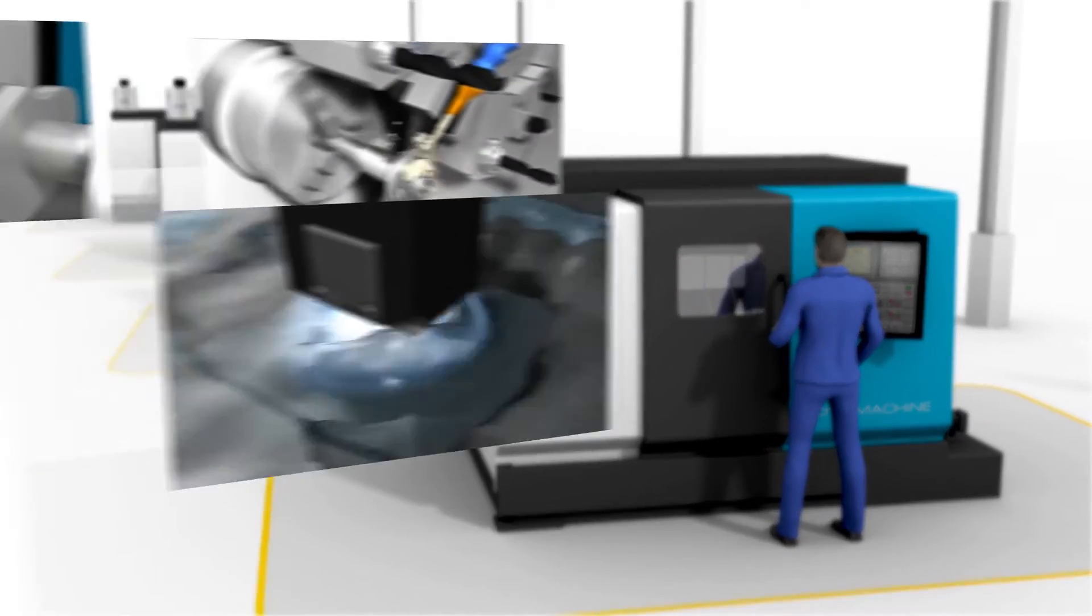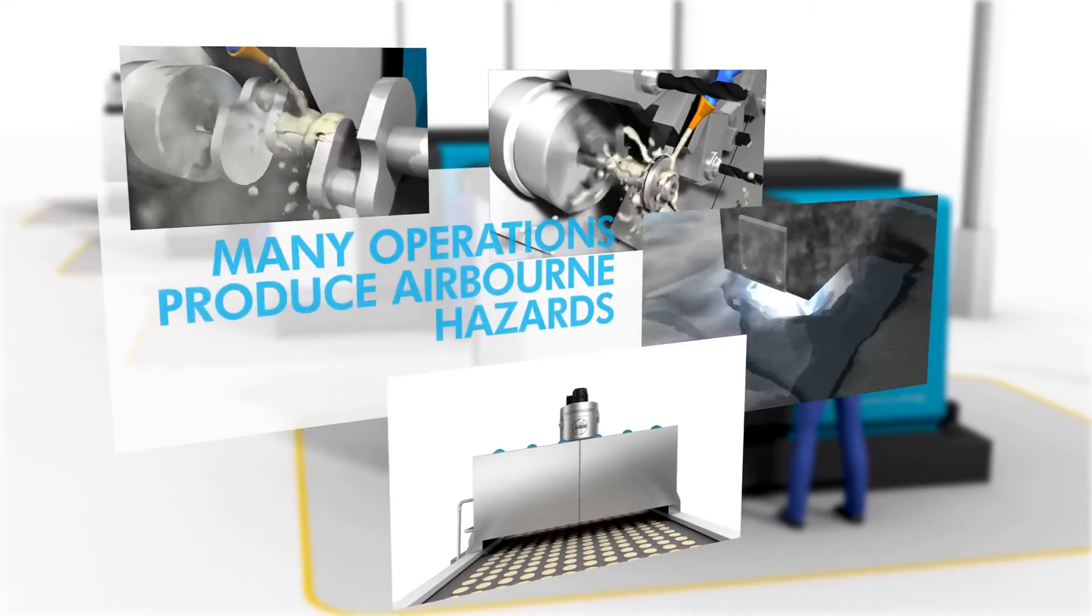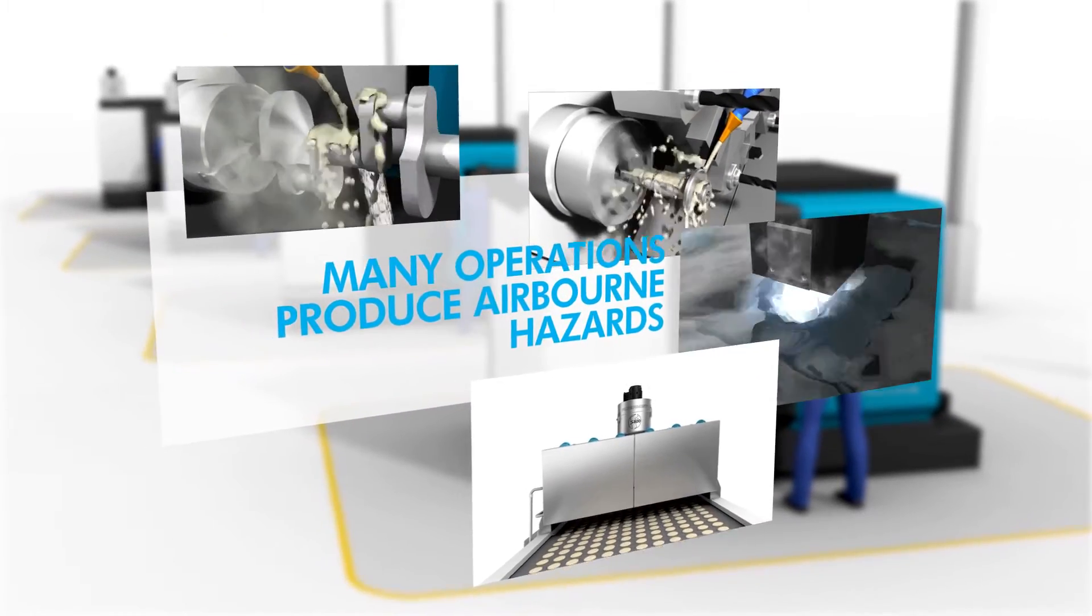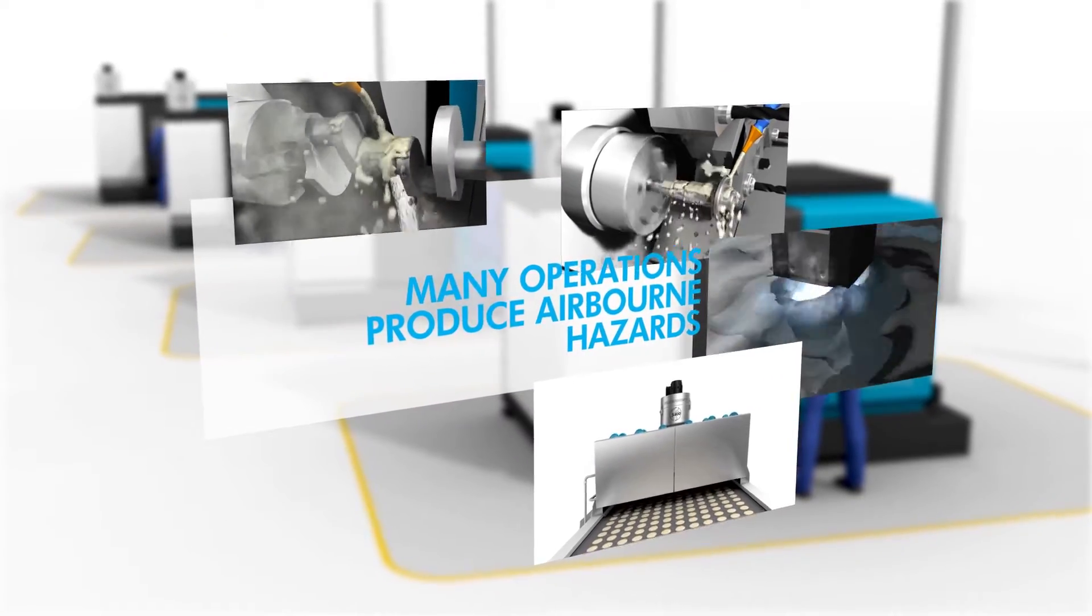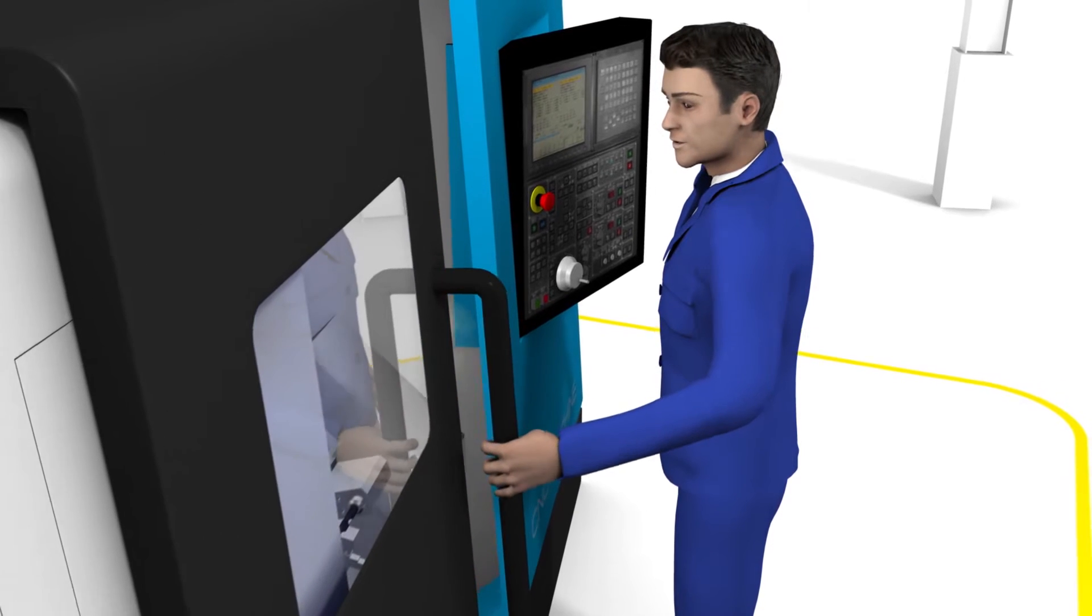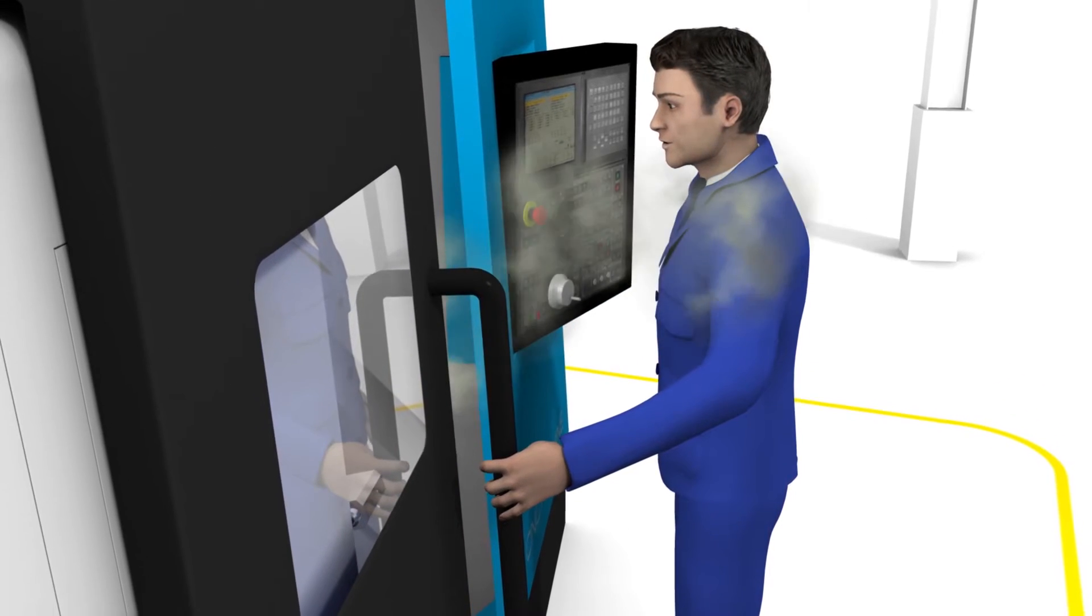Operations including turning, grinding, milling, spark erosion, sawing and even food processing can result in operatives being exposed to a wide range of airborne and hazardous substances in the workplace.